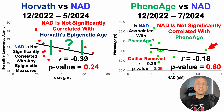So evaluating telomere length and three other measures of biological age, through 11 tests, NAD is not significantly correlated with any of these measures.